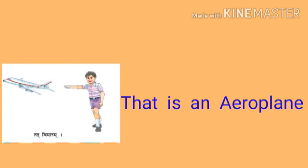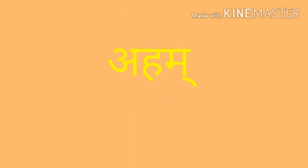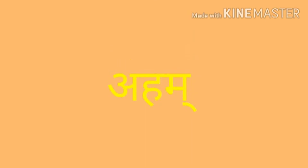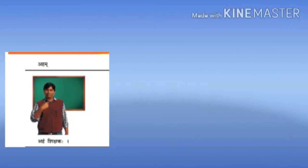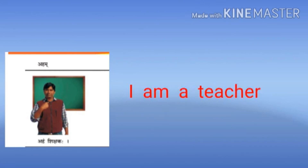These are all Napunsakalinga neuter gender Ekavachnam words. Now moving to the last category: multi-gender Ekavachnam — Aham and Tvam. These two are multi-gender pronouns used for all three genders: Strilinga, Pulling, and Napunsakalinga. The first multi-gender example is Aham Shikshakaha — I am a teacher.